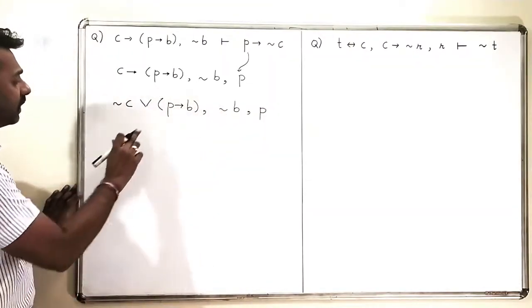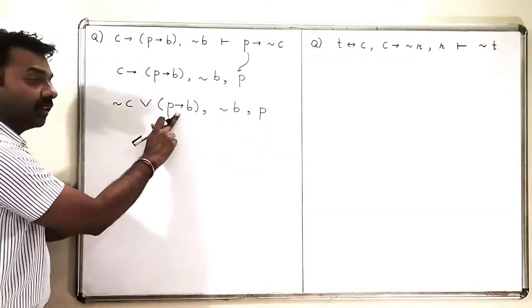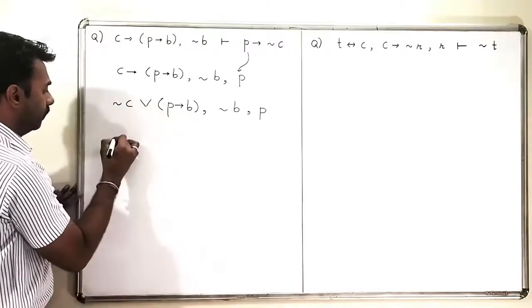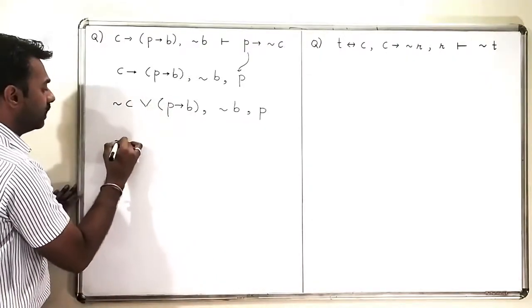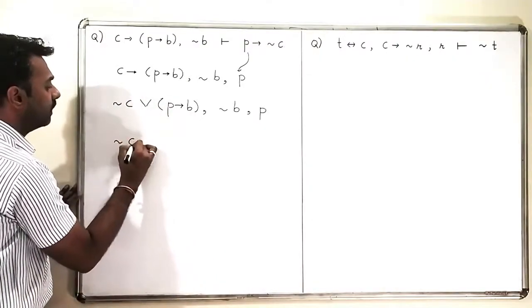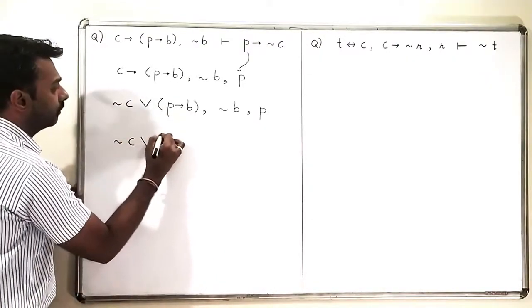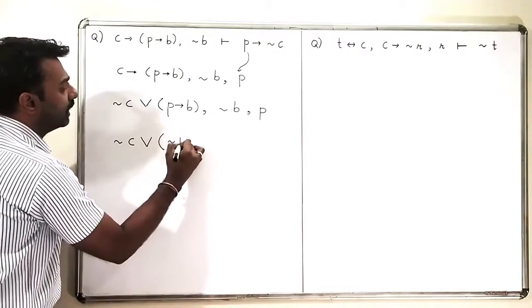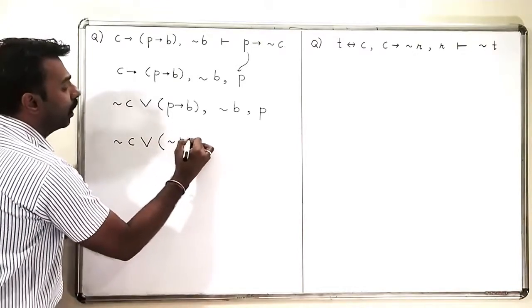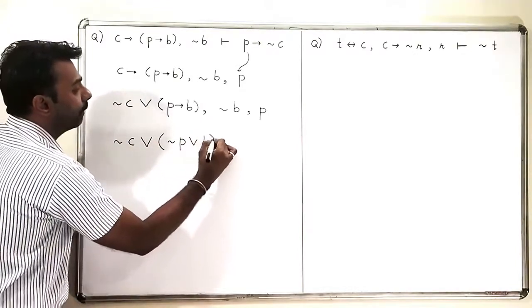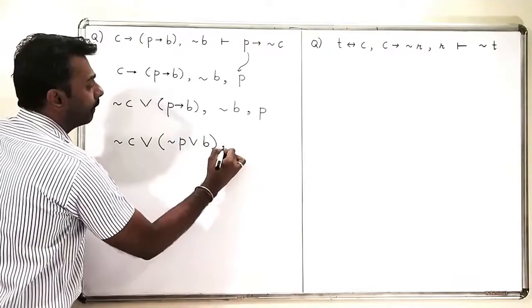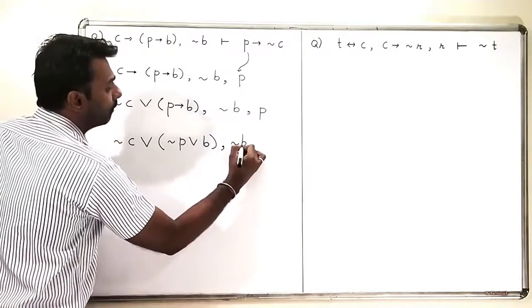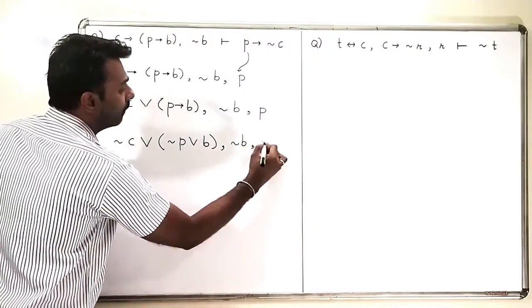Now I will again convert this inner implication into a disjunction. So it becomes: negation C or negation P or B, then negation B, and P.